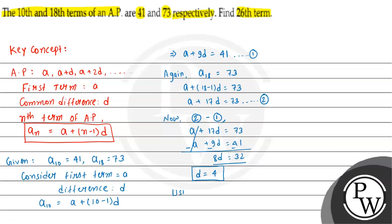Using equation 1, we can write a plus 9 into d equals 41. Since d equals 4, this becomes a plus 9 into 4 equals 41, so a plus 36 equals 41. Therefore, a equals 41 minus 36, which equals 5. So a equals 5 and d equals 4.